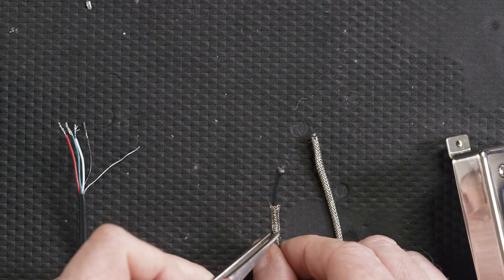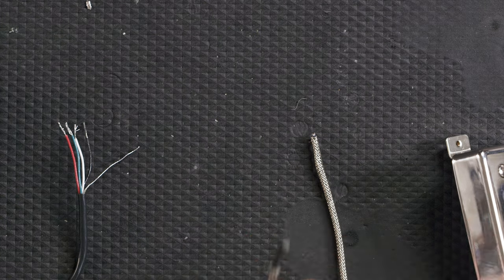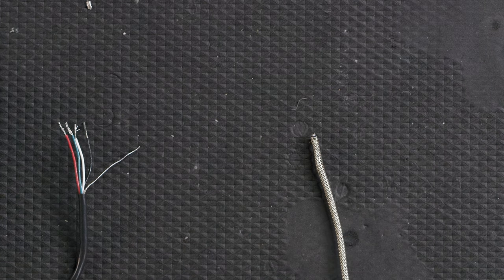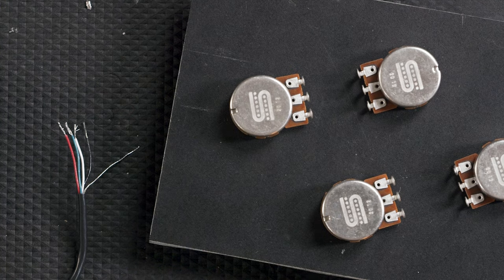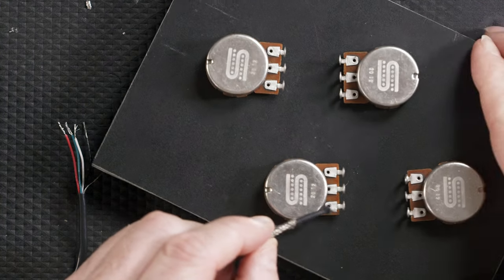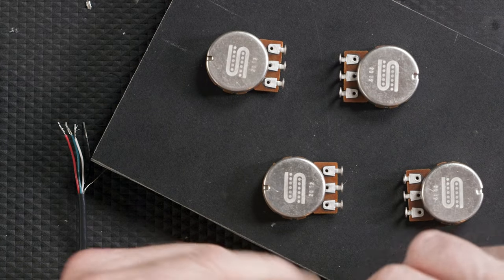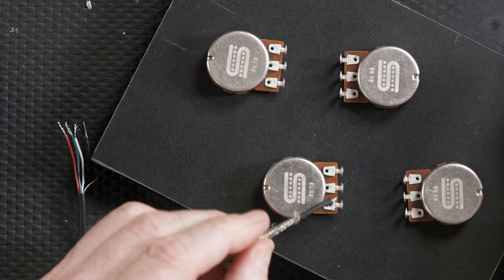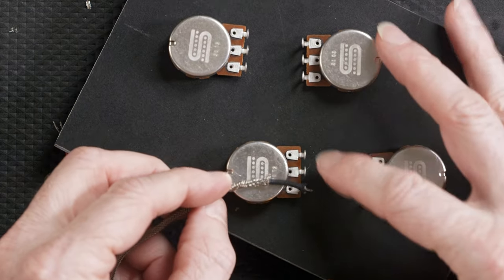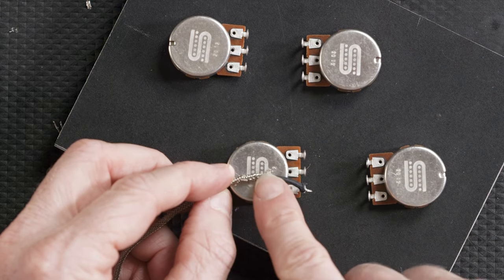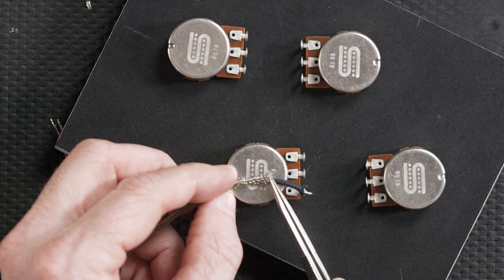The way that would look on a potentiometer is the hot lead would connect to the outer lug. This wire needs to be tinned, but it would connect there. And then the braid would need to be grounded to the back of the potentiometer.